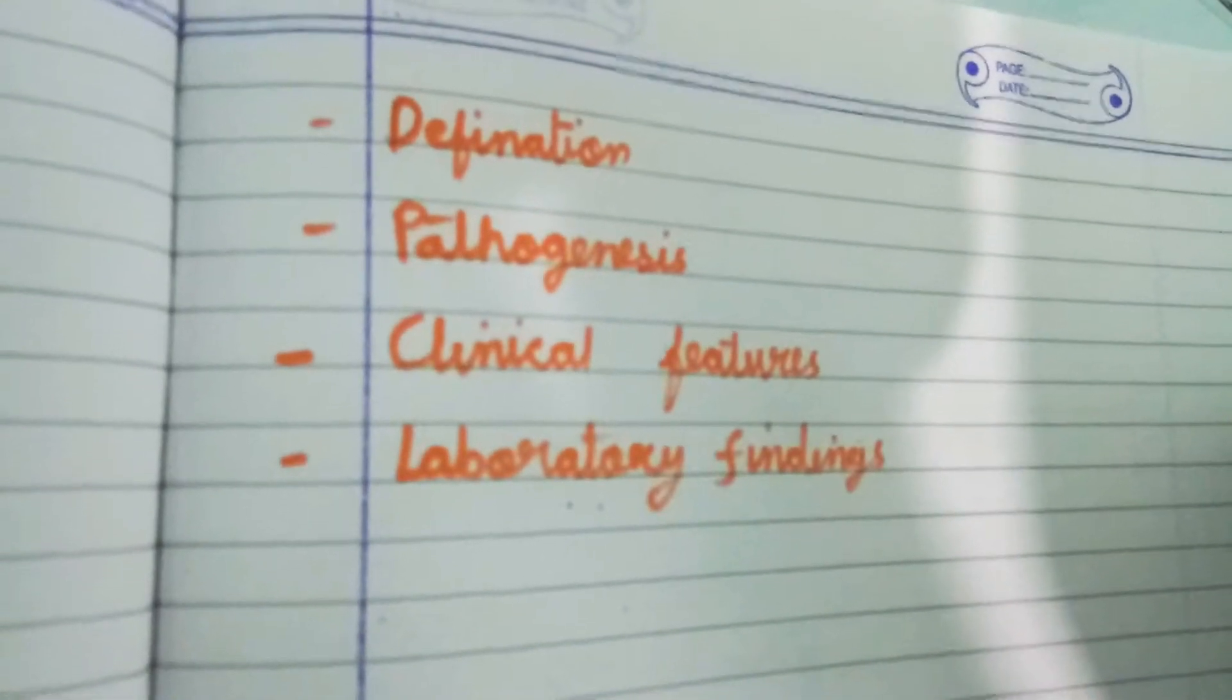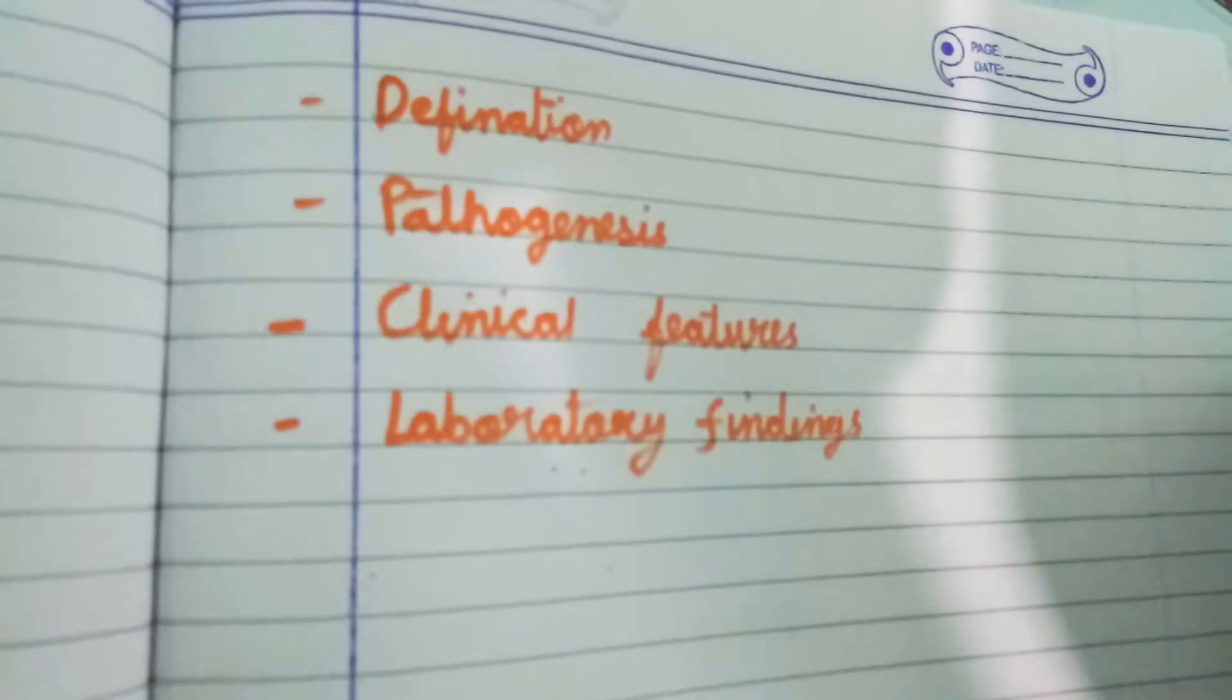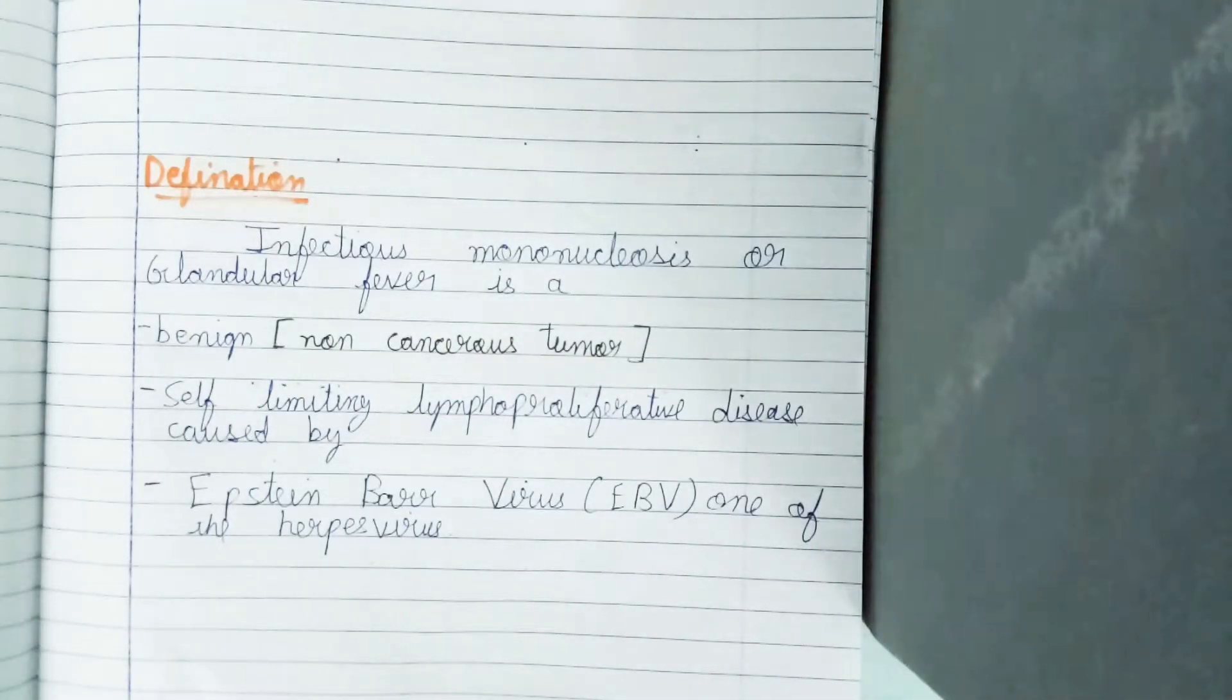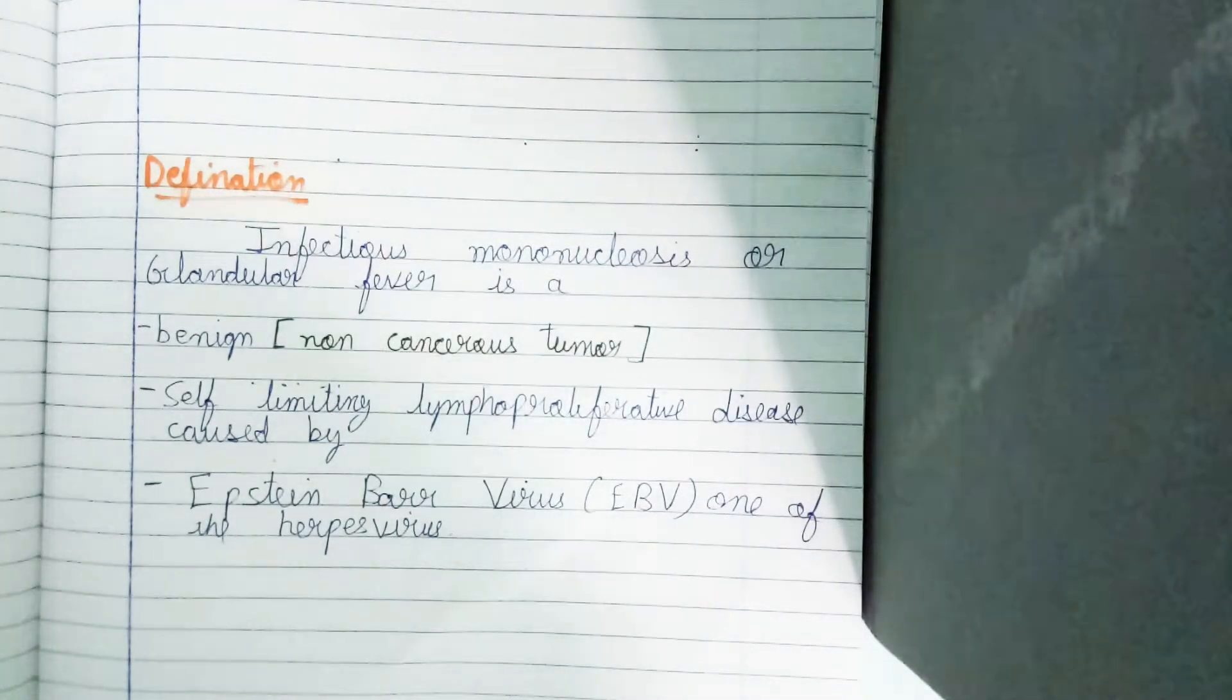We will go through the definition, pathogenesis, clinical features, and laboratory findings of this disease. Infectious mononucleosis or glandular fever is a non-cancerous, self-limiting lymphoproliferative disease where the number of lymphocytes is increased, caused by the Epstein-Barr virus, one of the herpes viruses, actually a B category virus.